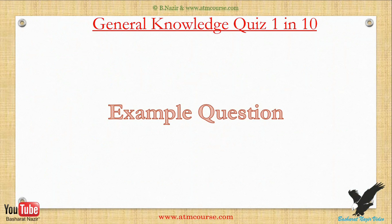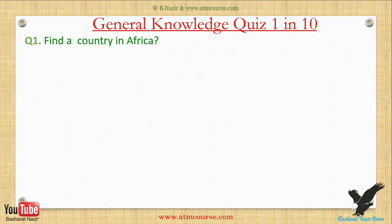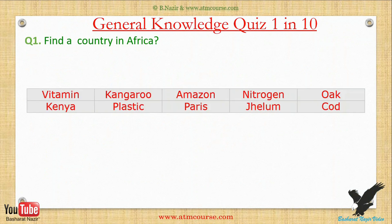Let us start with an example question. This example will give you a guide on how to do the exercise. In each question you will be presented with the question text, then you will be presented with ten possible answers. Only one answer will fit the question, and finally you select the correct answer.